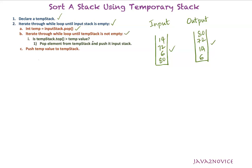Inside this inner while loop, check that the top of the temporary stack is greater than the temporary value popped from the input stack. As long as this condition is valid, pop out the element from the temp stack and keep pushing it to the input stack. Once we are out of the inner while loop, push the temp value to temp stack. The iterations continue until the input stack is empty, at which point the temporary stack holds the elements in sorted order.